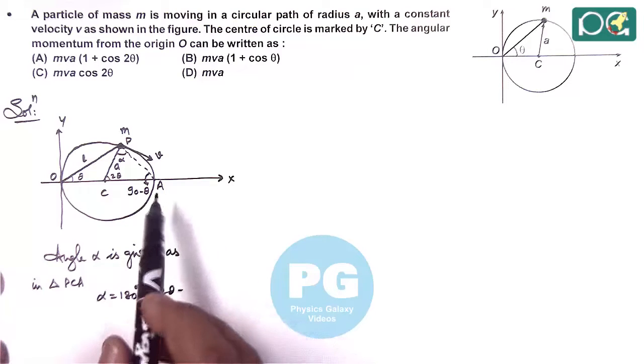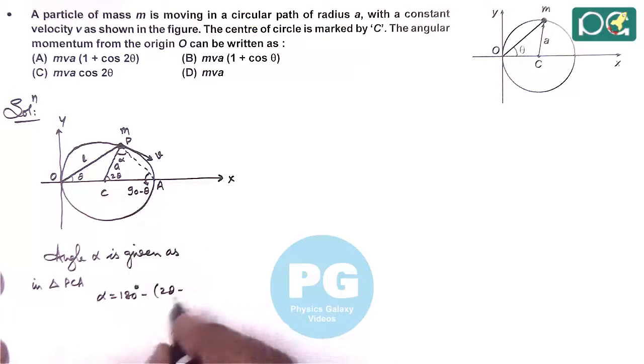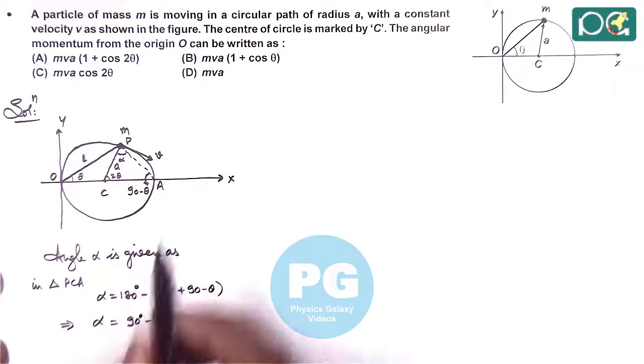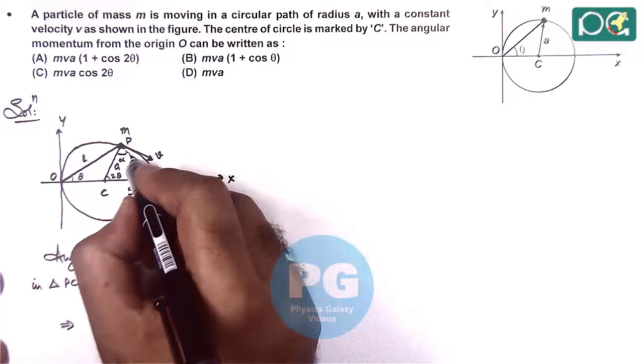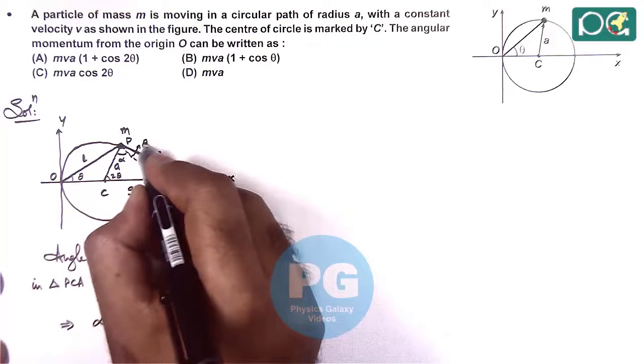So here we are getting 2 theta plus 90 minus theta. So simplifying the value of alpha, we are getting 90 degree minus theta. So if alpha is 90 degree minus theta, that means this angle will be theta.